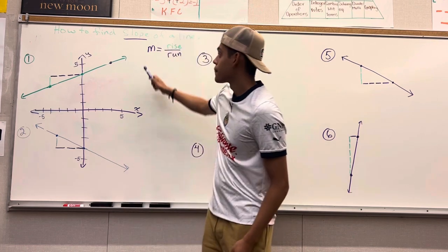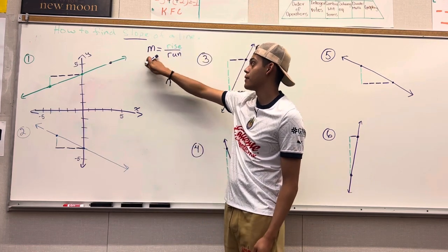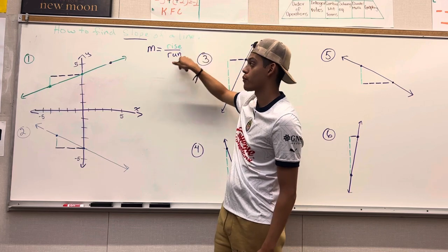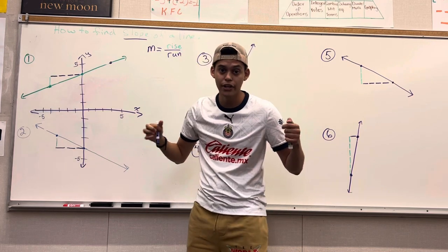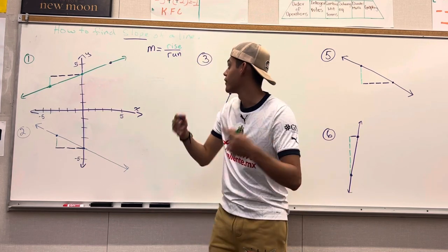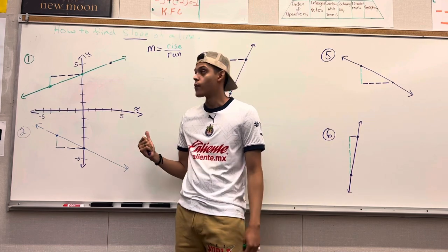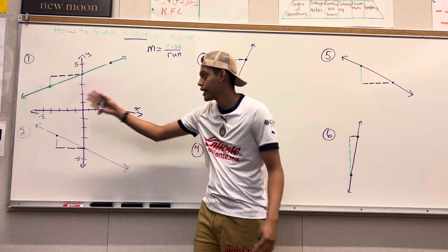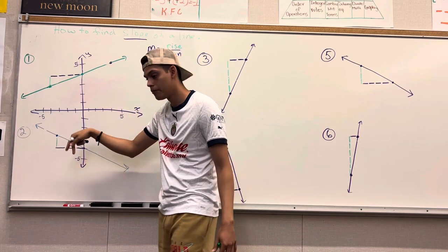Remember, the slope of a line is m. M equals the rise over the run. The rise, like an elevator, you're going up or you're going down. And the run, you're just running to the right. And m — think of m as a mountain; it can go uphill and it can go downhill.